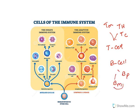Both B and T cell adaptive systems have memory cells. When the same pathogen causes infection a second time, these cells immediately show action because they have memorized the pathogen from the first attack. This is how vaccines are developed.